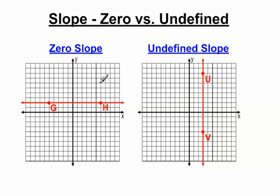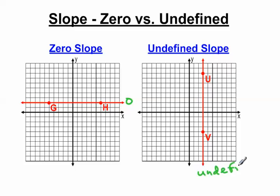A zero slope is a slope that goes straight across horizontally — this is a slope of zero. An undefined slope is a slope that goes straight up and down. It's just a vertical line, and so this is an undefined slope. Let me write that down.